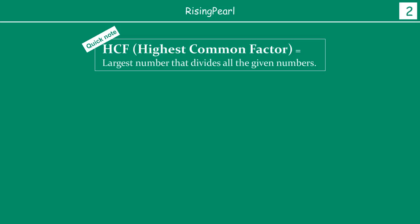So what is HCF? HCF of any given numbers is nothing but — HCF stands for Highest Common Factor. That is the largest number that divides all the given numbers. For example, if I have two numbers, let's say 4 and 18, and I'm trying to find the HCF of these two numbers, I'm trying to find such a number which is the highest common factor for both 4 and 18.